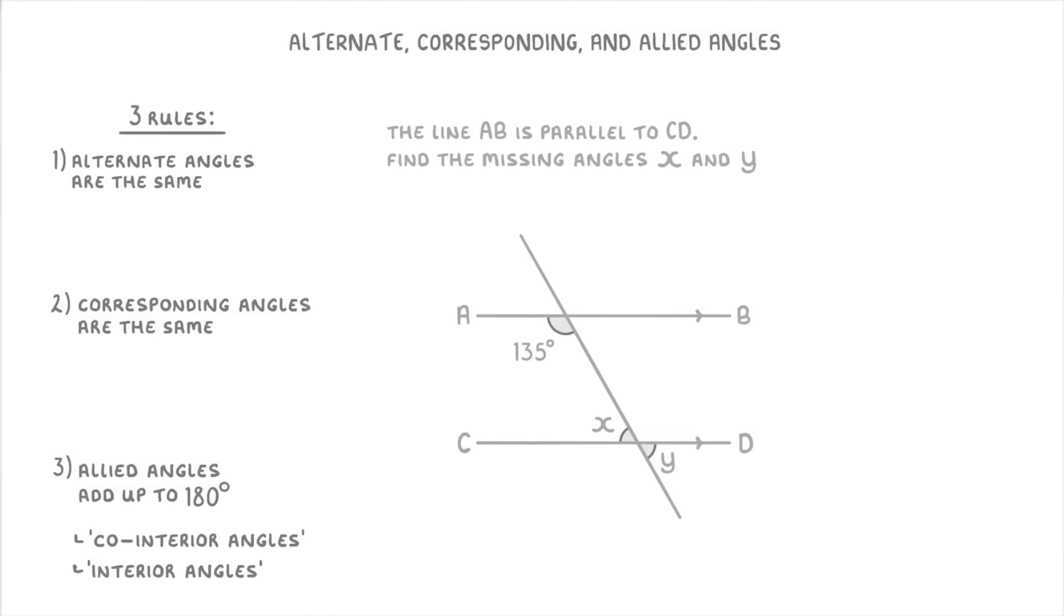Now, because of all of the different rules that we can use, there are normally multiple ways that we can do questions like this. And so there's no one correct way of doing it. The way I would do it though, is notice that this section here is like a backwards C shape. And so the 135 degrees and the x are allied, or co-interior angles, which means that they must add together to make 180 degrees. So we now know that 135 plus x equals 180, which means that x is 45 degrees.